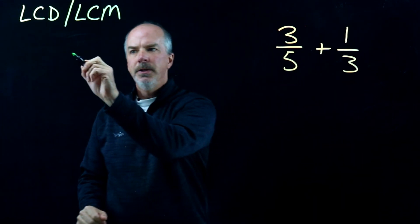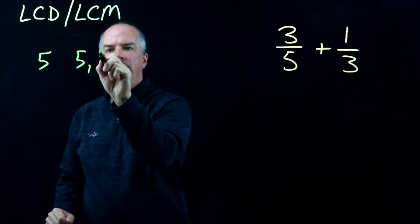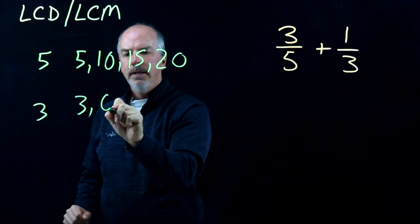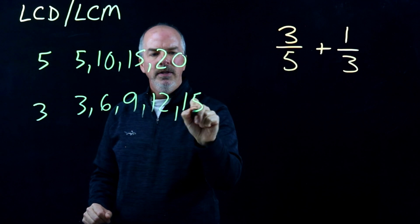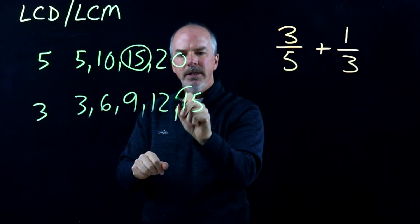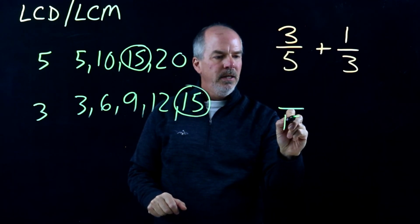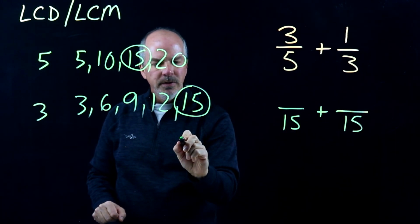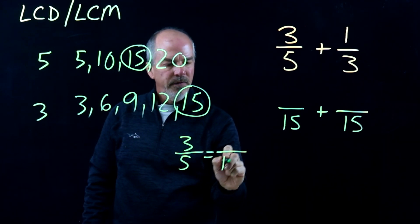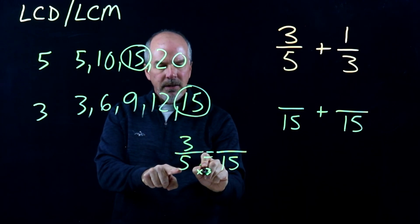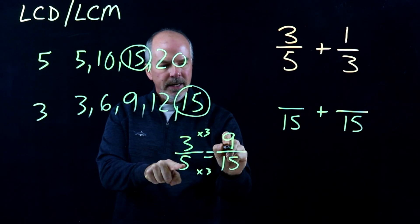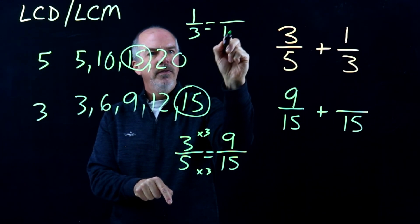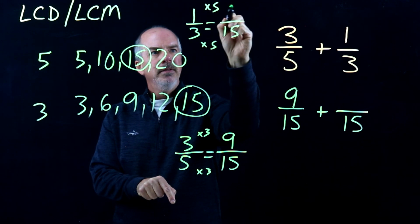3/5 plus 1/3. If I list out my multiples of 5, I have 5, 10, 15, 20. List out my multiples of 3: 3, 6, 9, 12, 15. So 15 is going to be my least common multiple, least common denominator. I need to change 3/5 to something over 15. So 3/5 equals something over 15 — I multiply times 3 to get to 15, so I multiply the numerator times 3 and that's 9. So 9/15. Now my 1/3 equals something over 15 — that's times 5 and times 5. So 5/15.